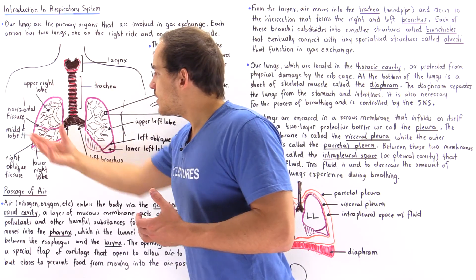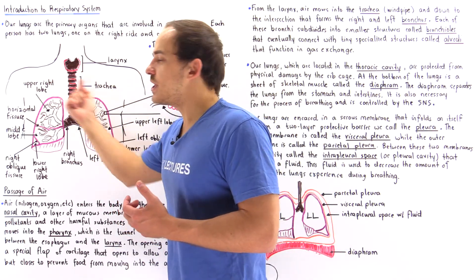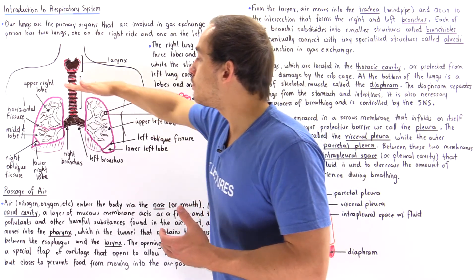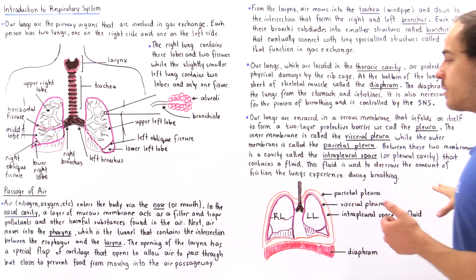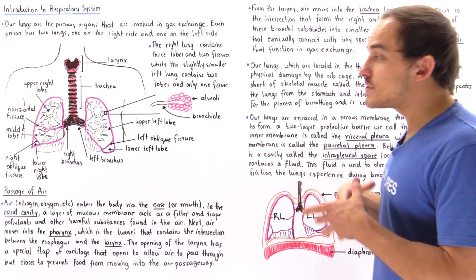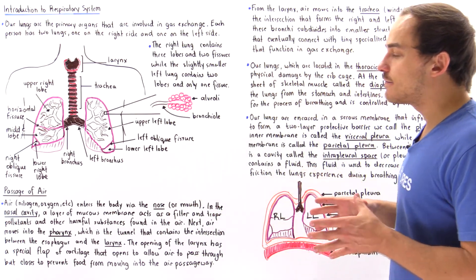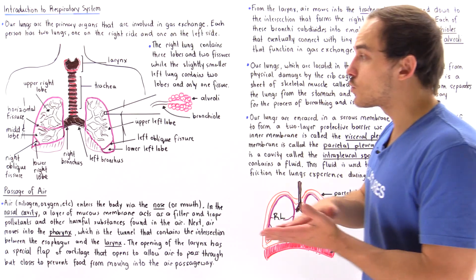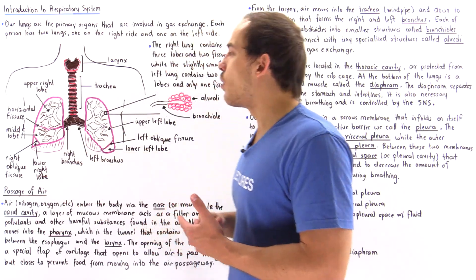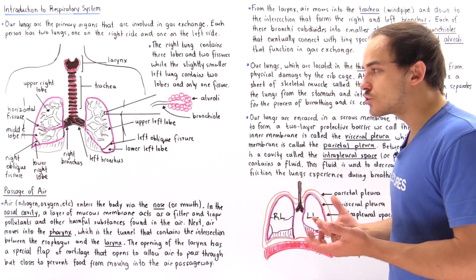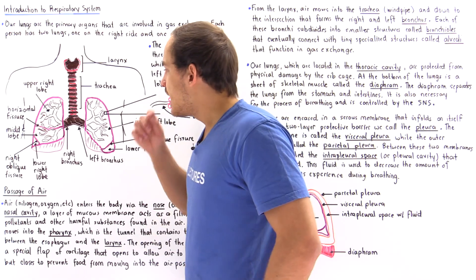Our two lungs are found within our thorax, within our thoracic cavity. Below our lungs there's a special type of skeletal muscle known as our diaphragm. The diaphragm separates our lungs from the stomach and the small intestine, and it also functions in the process of respiration.